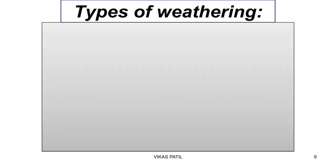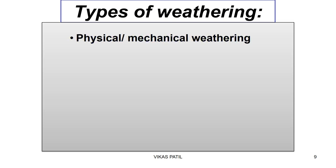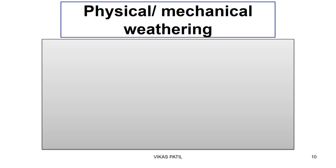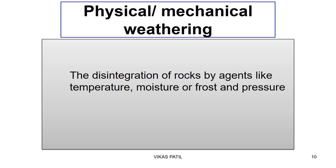Types of weathering: weathering can be physical or mechanical in nature, then it can be chemical in nature, or it could be biological in nature. In physical or mechanical weathering, the rocks are simply broken down into smaller pieces. There is no further change in the composition of the rock or the mineral content. It is done by agents like temperature, moisture or frost, and pressure.